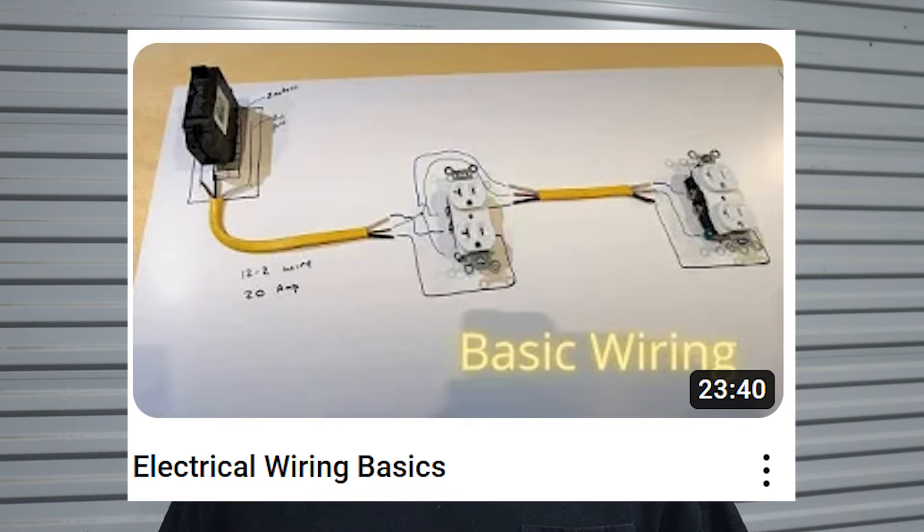So the project for today is to replace a couple of regular switches with dimmer switches. One of the switches is just a regular single pole switch and the other switch controls lights on a three-way circuit. If you're unfamiliar with those types of circuits I have an electrical basics video which explains everything. I suggest maybe watching that first and then coming back to this video.